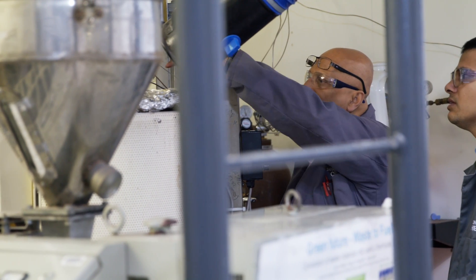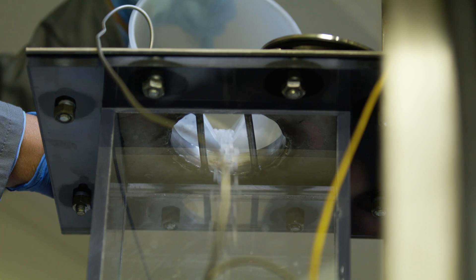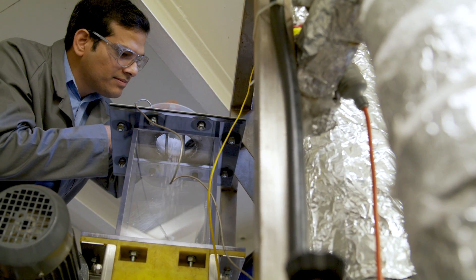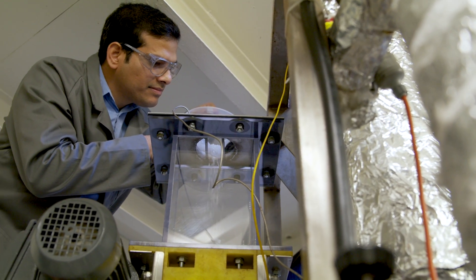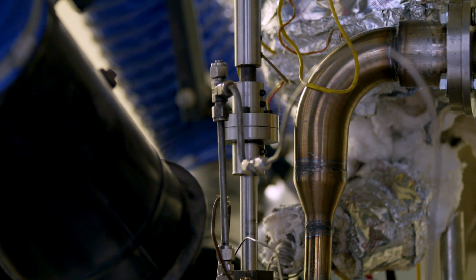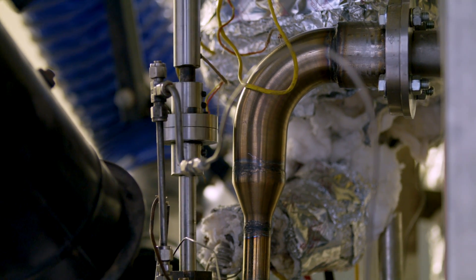The process involves heating shredded plastics to high temperatures, creating oil and gas vapours that are then mixed with a catalyst to produce either diesel or petrol fuels.